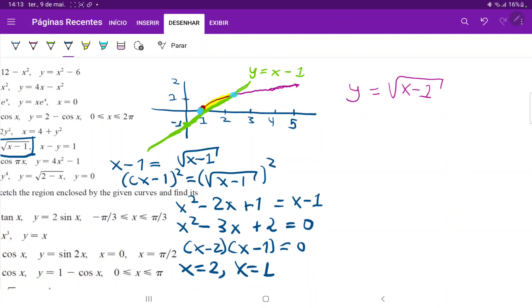So with this, we are ready to set up our integral. It is just the integral from one to two of our upper function, which is the function that's in pink. So square root of x minus one, and then minus the lower function. So minus x minus one, and then all of this times dx.